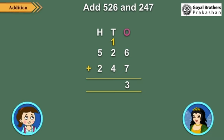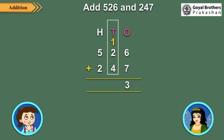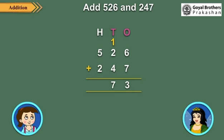Now add the tens. 1 ten which was carried over, plus 2 tens, plus 4 tens is equal to 7 tens. So write 7 under the tens column. Neha, do not forget to add the 10 you had regrouped. Okay, okay.